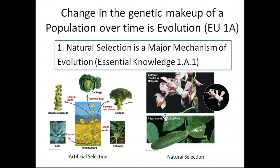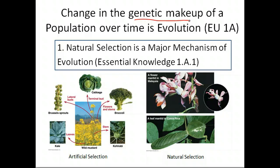Getting to our first enduring understanding: evolution is a change in the genetic makeup of a population over time. One way we've discussed this is mathematically, through the Hardy-Weinberg equation. The new thrust in AP Biology is to make our studies quantitative, so you've been able to show how allele frequencies change over time using the Hardy-Weinberg equation for many different questions.